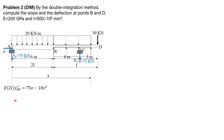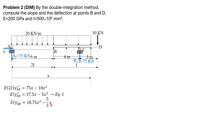Integrating once with respect to X: EI Y prime AB equals 18.75X squared minus 5/3 X cubed plus C sub 1. Integrating again: EI Y AB equals 6.25X cubed minus 5/12 X to the 4th plus C sub 1 times X plus C sub 2, but C sub 2 is zero because when X is 0, Y is 0 at the origin.